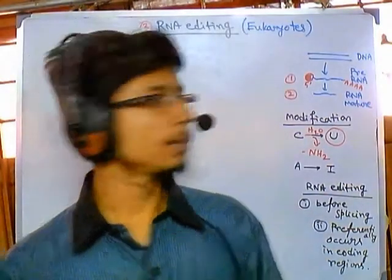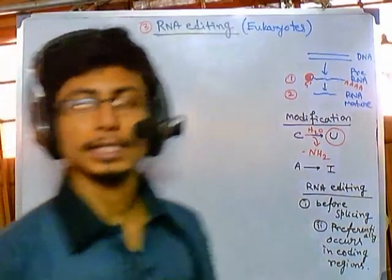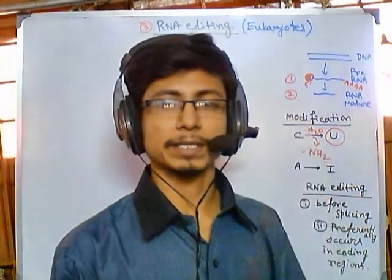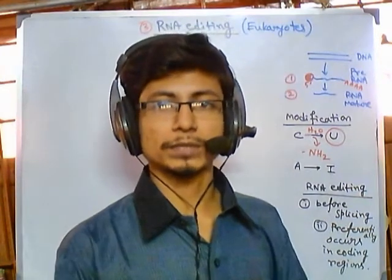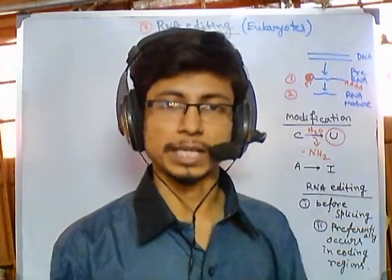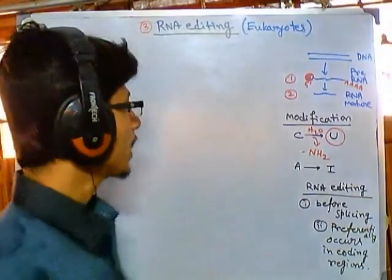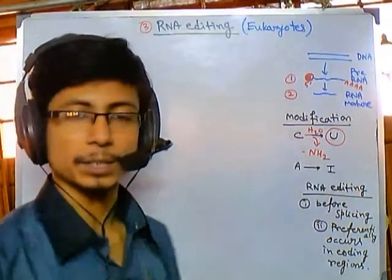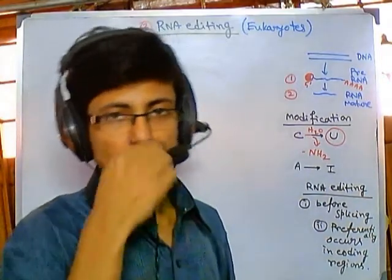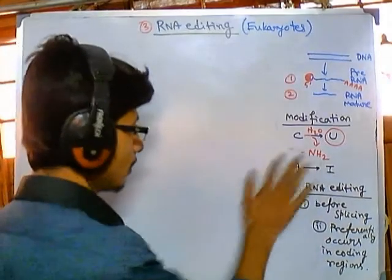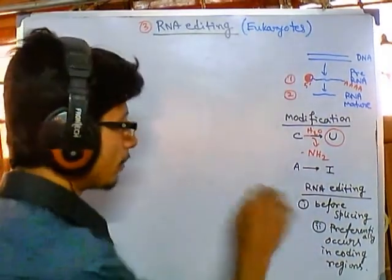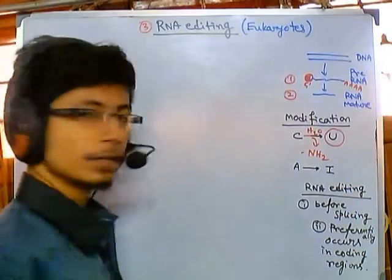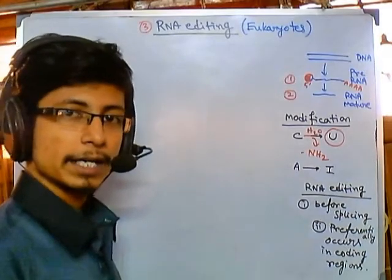Welcome back friends. We are talking about RNA editing mechanisms in higher eukaryotes. We have talked about the mechanism inside the mitochondria of eukaryotic systems like angiosperm, plant mitochondria, and also the modification of cytosine to uracil in the case of apolipoprotein in mammalian cells. Now we will be talking about the modification from adenosine to inosine, which is a kind of modification found in higher eukaryotes like mammals.